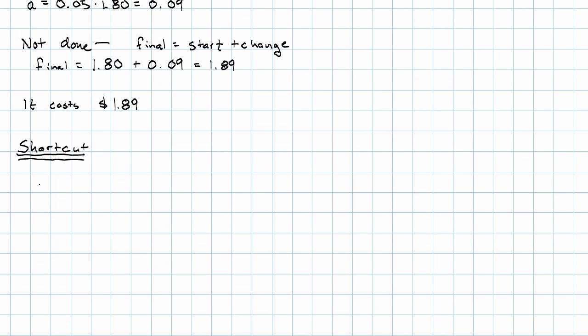Here were the steps that we took. First, we said that change is the percent change times the starting value. Instead of using all these words, I'm going to say C is percent change times start. In this problem, we found that the change was 0.05 times $1.80.